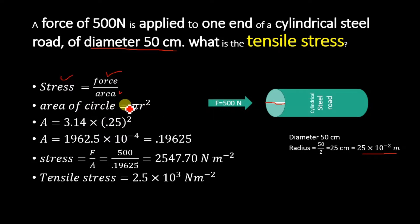The value of π is 3.14. This is r², so we have 0.25 meter, or 25 × 10^-2 is actually equal to 0.25, so we have 0.25 whole square. Now solving this equation, we will get this circular area is equal to 0.19625.